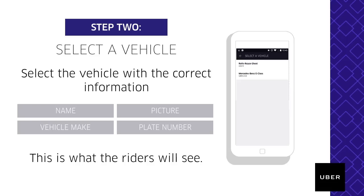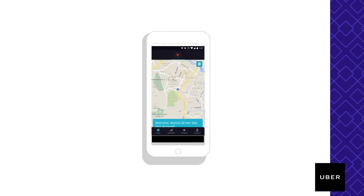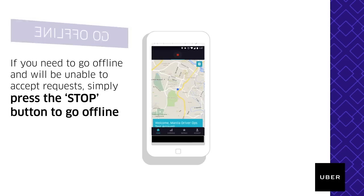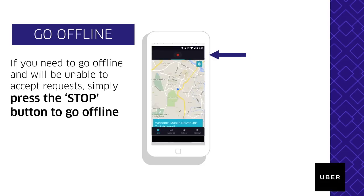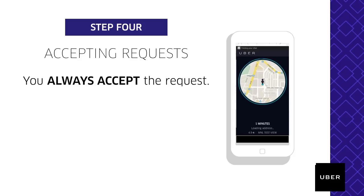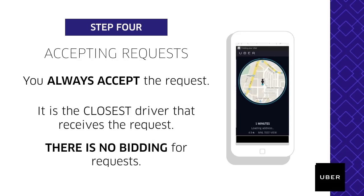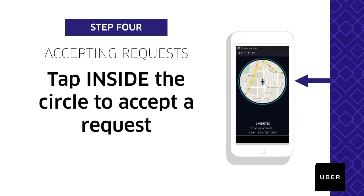After choosing a vehicle, Step 3 is to go online. When you are online, you will be eligible to take requests. Once you make sure that you are ready to drive, you may go online. When you have to take a break, you can always go offline. You only have 25 seconds to accept a request. Always accept the request — the nearest driver is the only one who will receive it. There is no bidding for requests. To accept a request, simply touch the screen.